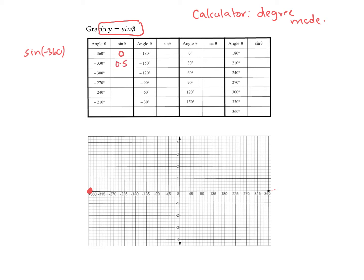Continuing the table: sine of negative 300 is 0.866, sine of negative 270 is 1, sine of negative 240 is 0.866, sine of negative 210 is 0.5, and sine of negative 180 is back to zero. Then continuing: 150 gives negative 0.5, then negative 0.866, negative 1, negative 0.866, negative 0.5, and back to zero at zero degrees.